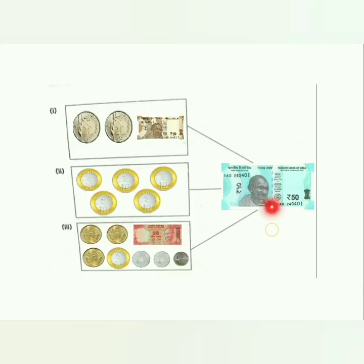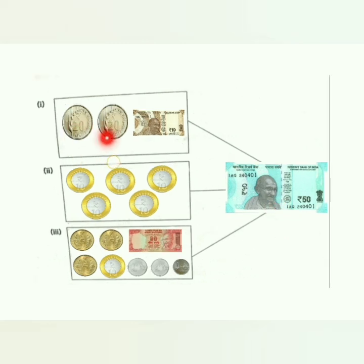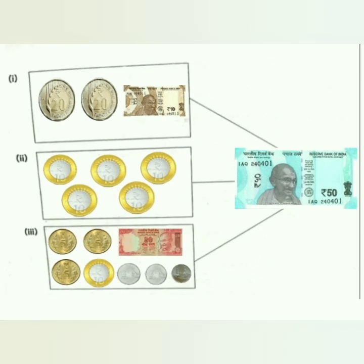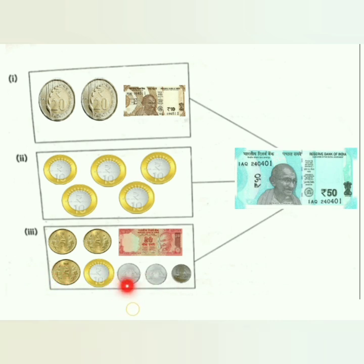Next, for a 50 rupees note: 20 plus 20 is 40, 40 plus 10 is 50. Then we have 5 coins of 10 rupees: 10, 20, 30, 40, 50. Then last we have 20 plus 10 is 30, 30 plus 5 is 35, 35 plus 5 is 40, 40 plus 5 is 45, 45 plus 2 is 47, 47 plus 2 is 49, 49 plus 1 is 50.